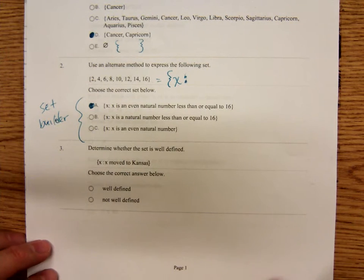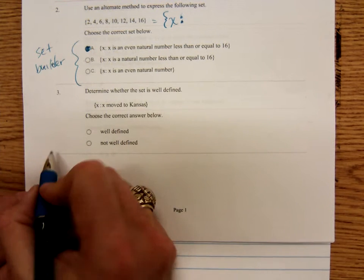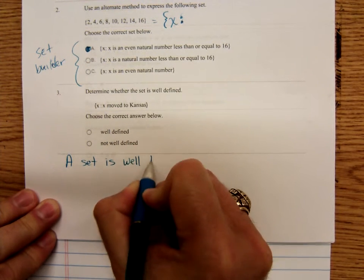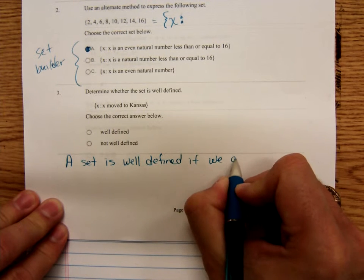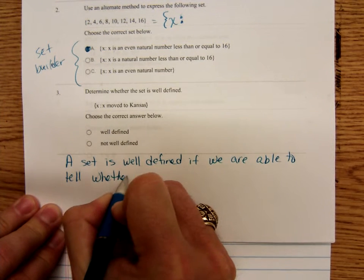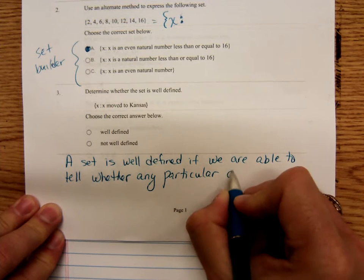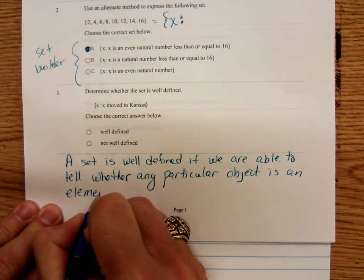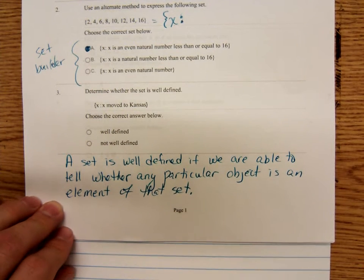Number three says determine whether this set is well defined. Well, what the heck does well defined mean? Did y'all get that definition from your reading? A set is well defined if we are able to tell whether any particular object is an element of that set.